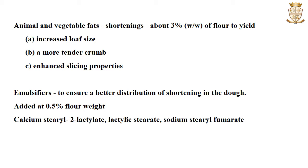Emulsifiers are used in conjunction with shortening to ensure better distribution of shortening in the dough. Emulsifiers contain a fatty acid such as palmitic or stearic acid which is bound to glycerol, lactic acid, sorbic acid or tartaric acid. They are added at 0.5% of flour weight. Commonly used emulsifiers are calcium stearoyl lactylate, lactylic stearate, sodium stearoyl fumarate, etc.